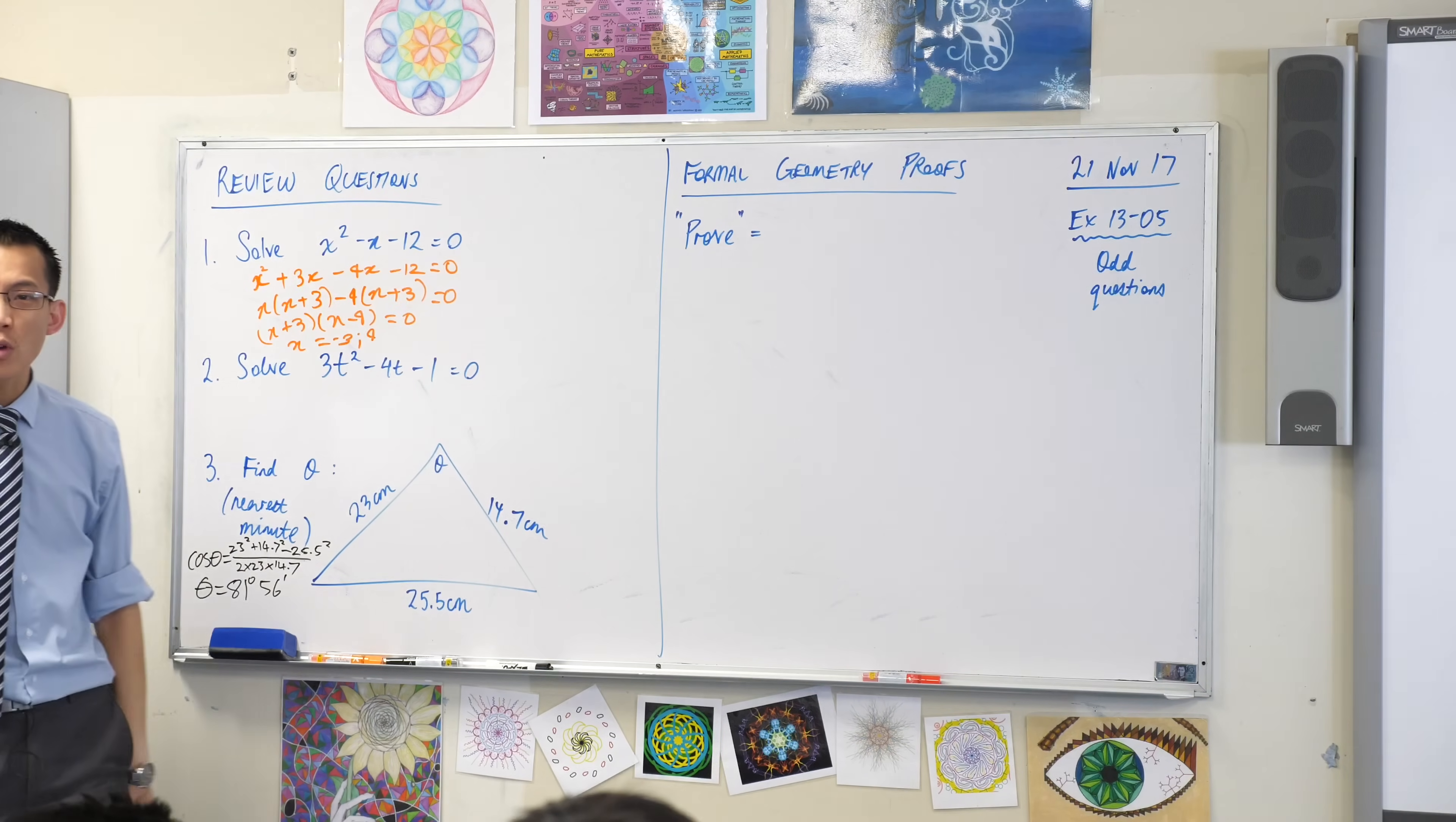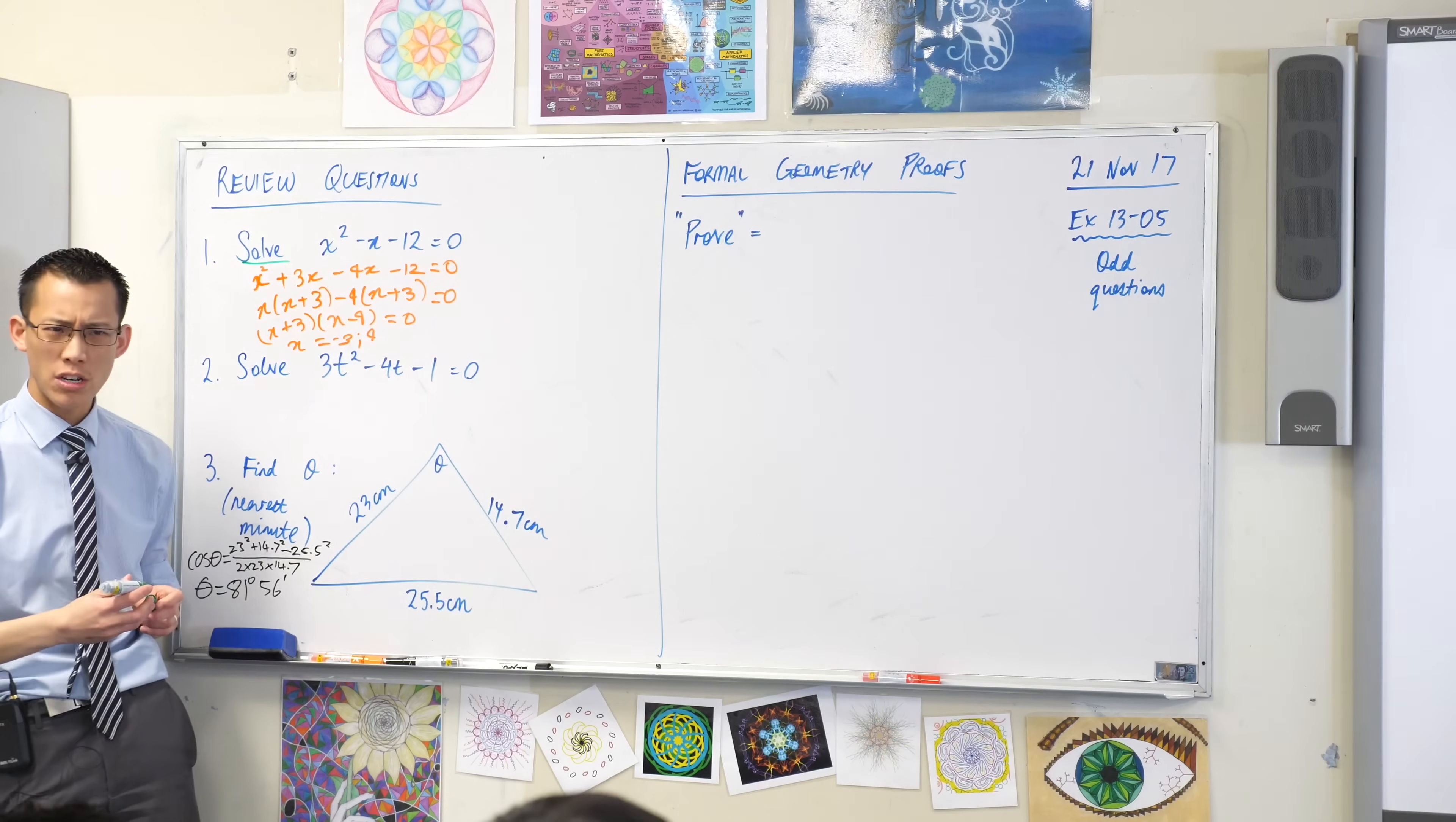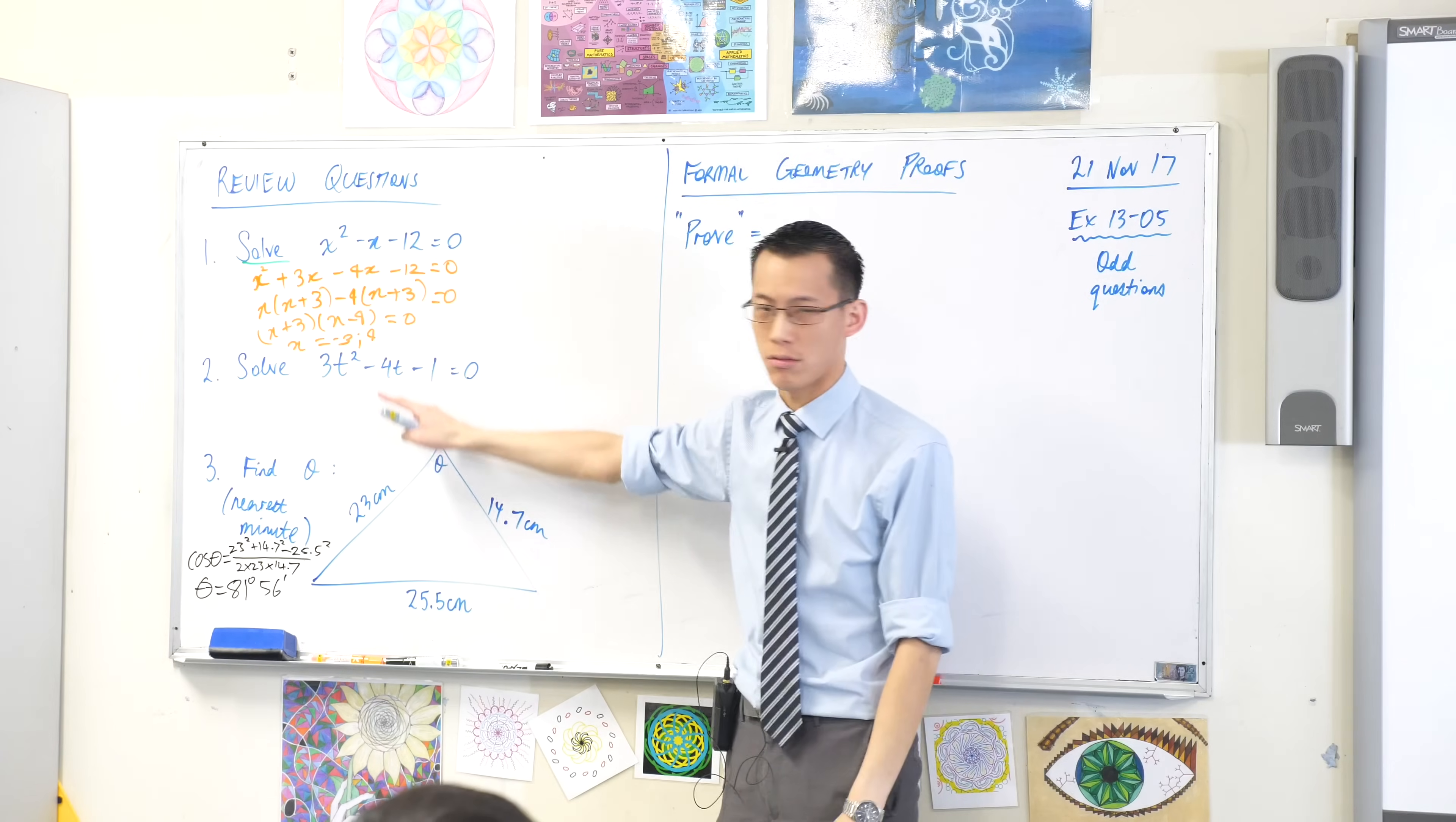We'll start at the top. x squared minus x minus 12. If it equals 0, when you say solve, what are you searching for? What are you looking for? You're searching for x but not just any x. There are specific values of x, you only want specific ones. What is it about these? Why is 2 not a solution or 1 or 0?